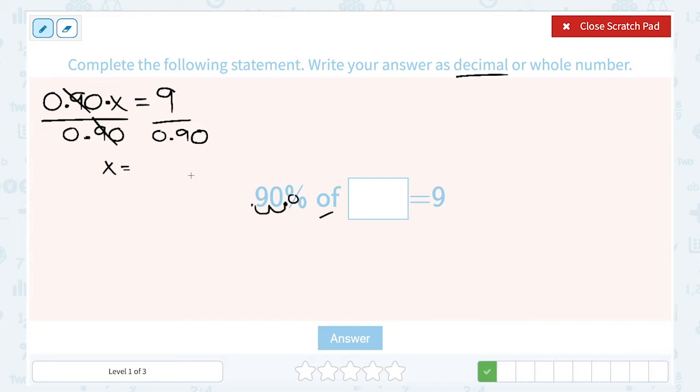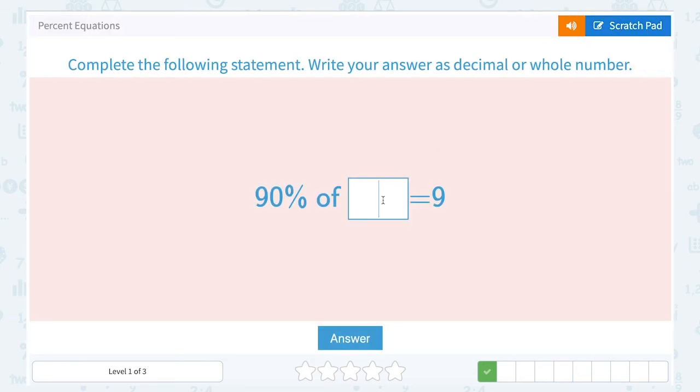9 divided by 0.9, that's going to leave me with 10. So x equals 10. So 90% of 10 is 9. Now, does that make sense? Yes, 90 is most, right? 90 out of 100 would actually simplify to 9 out of 10. So that makes a lot of sense.